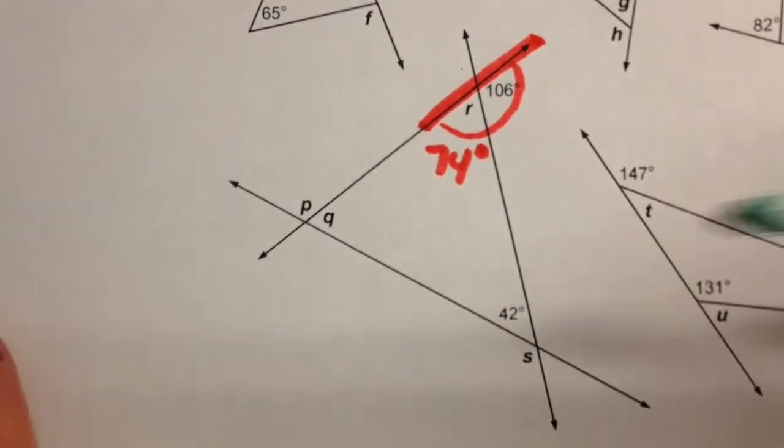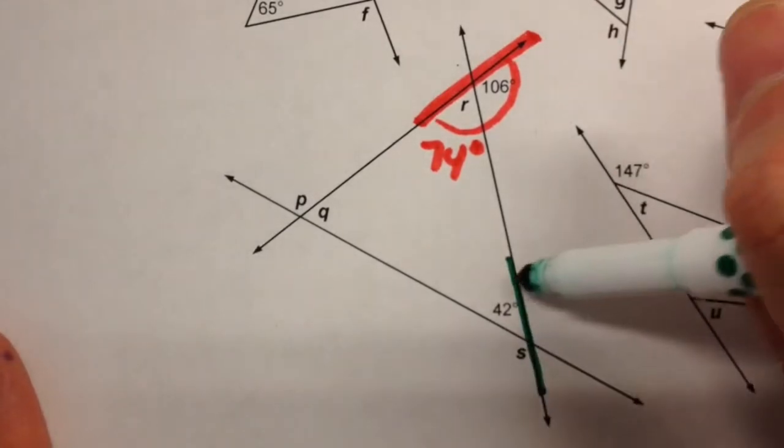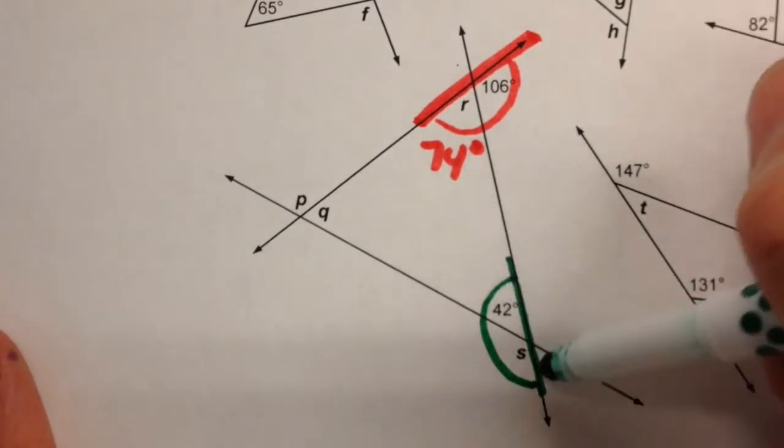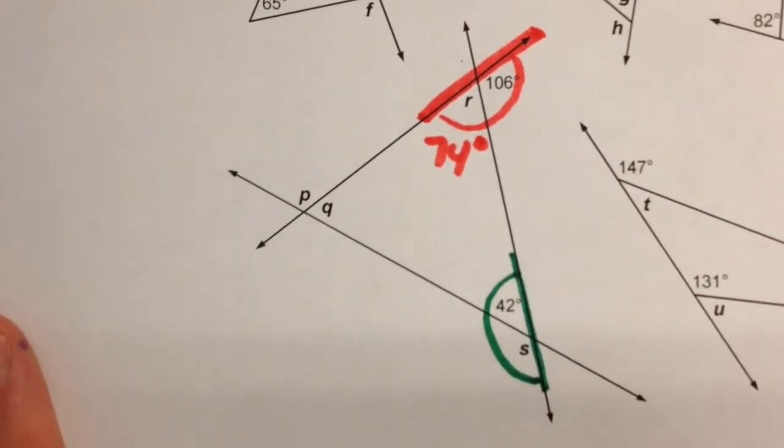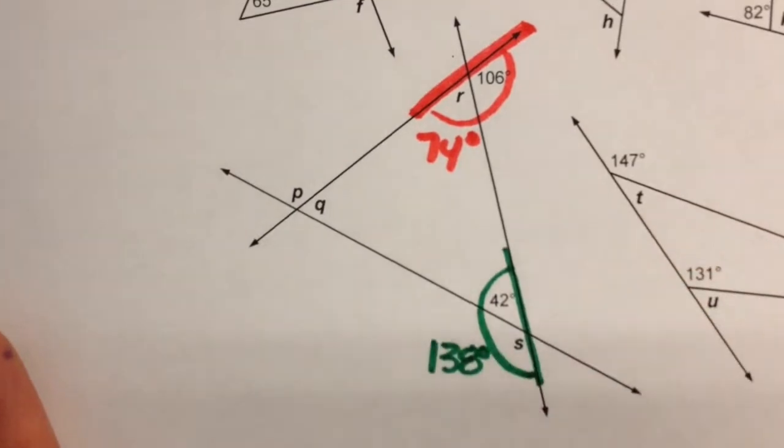Similarly, down below angle S, we can figure that one out too because these two angles form a straight line, so these two have to add up to 180 degrees also. So this must be 138 degrees.